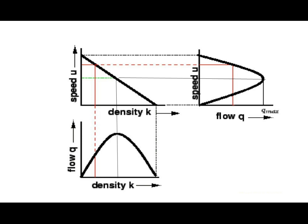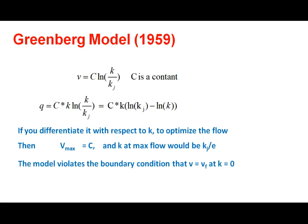The Greenshields equation was used by researchers for almost three decades. In 1959, Greenberg carried out experiments and collected data on volume, speed and density in the north tube of the Lincoln Tunnel. He fitted a logarithmic function to speed and density data and found that speed-density is not a linear but a logarithmic relation: V = C × ln(K_J / K), where C is a constant.